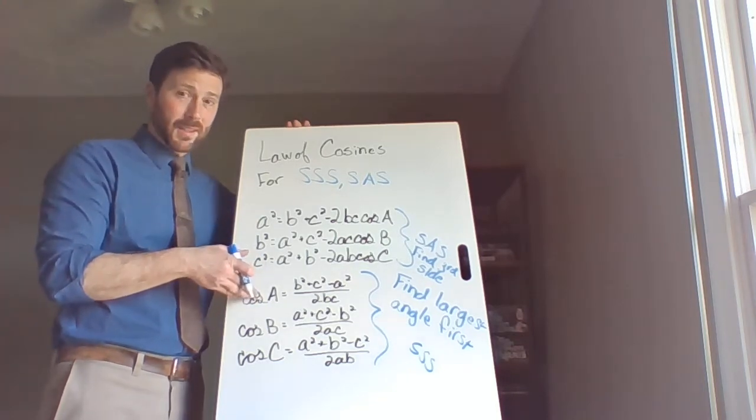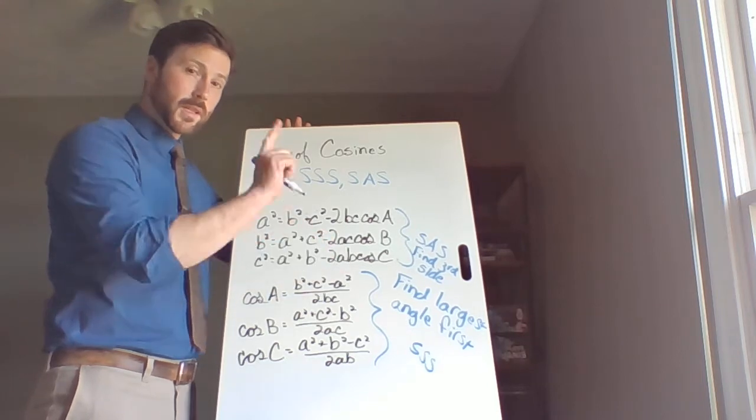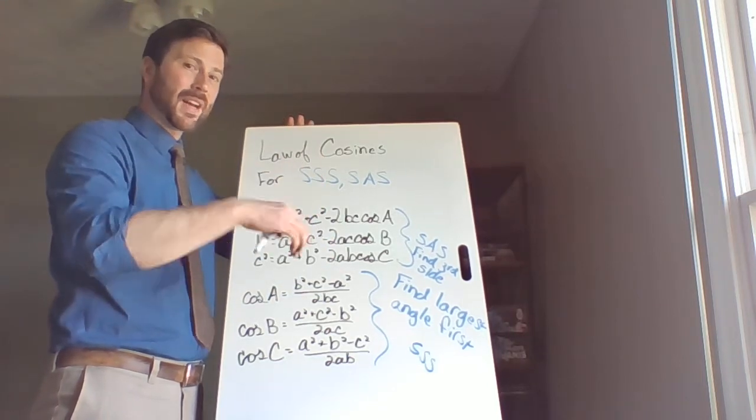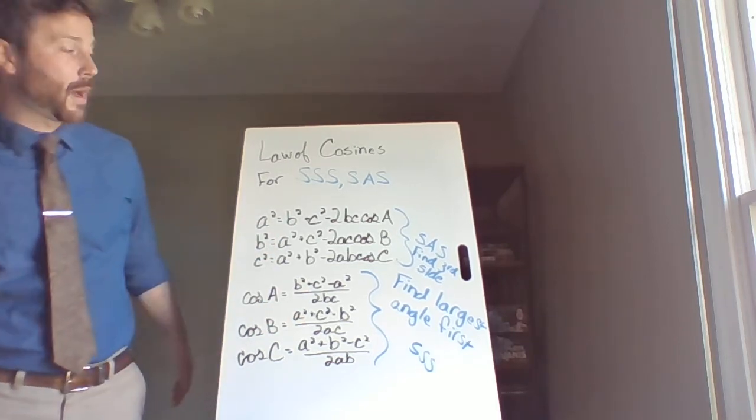These formulas are messy, like to avoid them if we can. So what we'll do, use the law of cosines for one value, find that value, shift over to law of sines. Now what we're going to look at today are some story problems.